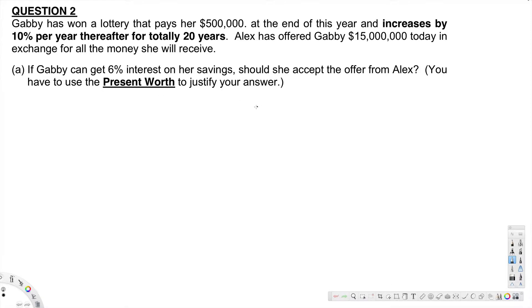Okay, now let's go ahead and take all the values. A is equal to $500,000 and N is equal to 20 years.